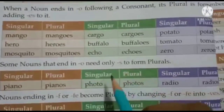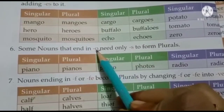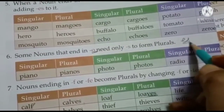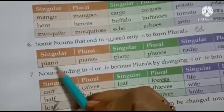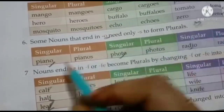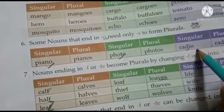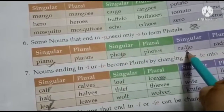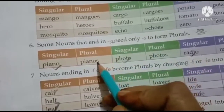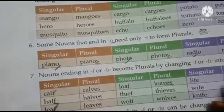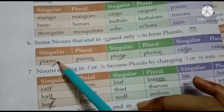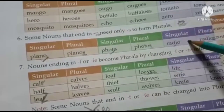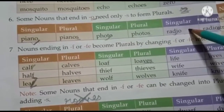There is also an exception for words ending in 'o'. Normally, words ending in 'o' like mango and tomato take 'es': mangoes (m-a-n-g-o-e-s). But three specific words — piano, photo, radio — do not take 'es'; you only add 's': pianos, photos, radios. Memorize these three: piano, photo, radio — only add 's', not 'es'.